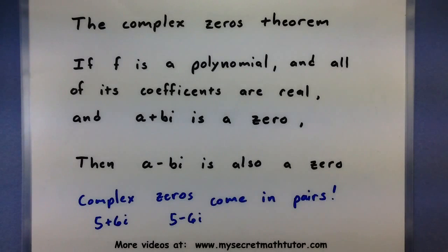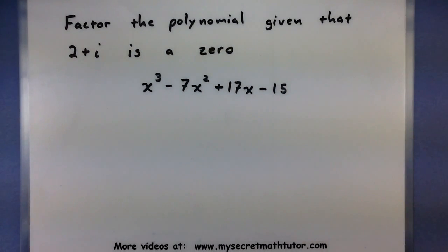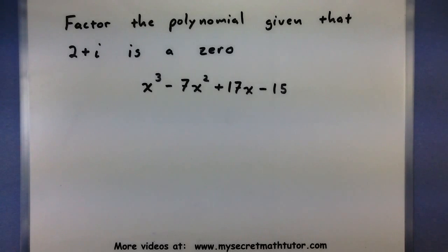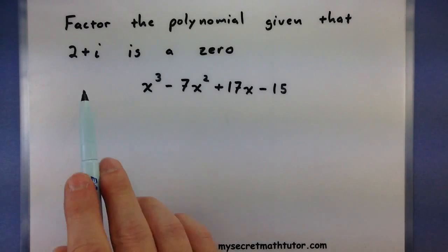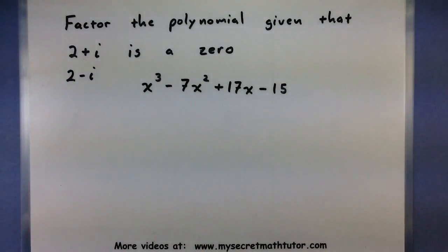Let's use this theorem in a couple of examples so you can see why it's important. The first one is for factoring a polynomial, and the only thing we know is that 2 plus i is a zero of this polynomial. Normally I'd start testing for other zeros, but because of the theorem, I actually know a little bit more. If 2 plus i is a zero, I know that 2 minus i is also a zero.